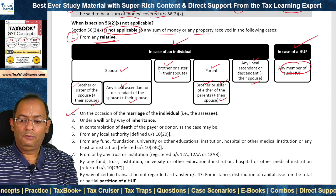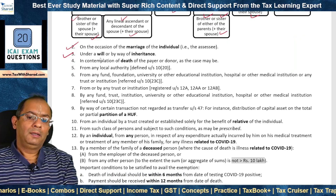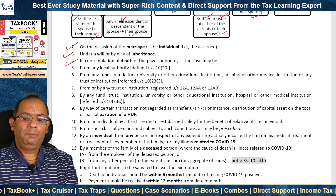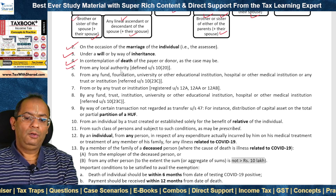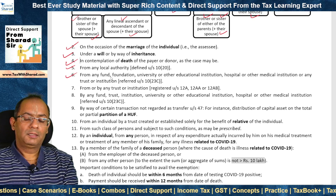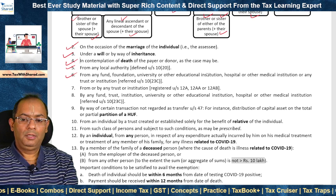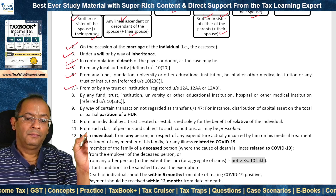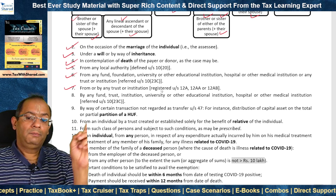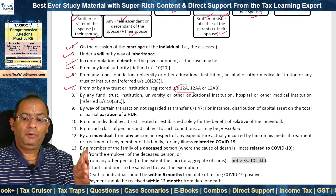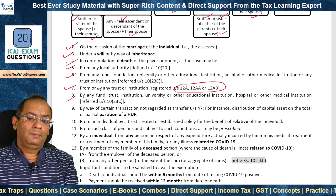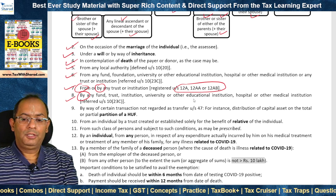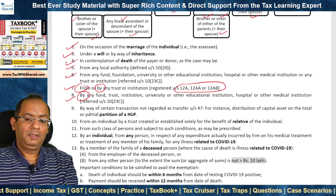Second exception: on the occasion of the marriage of the individual. Third: under a will or by way of inheritance. Fourth: in contemplation of death of the payer or donor. Fifth: from any local authority defined under Section 10(20). Sixth: from any fund, foundation, university or other educational institution, hospital or other medical institution, or any trust or institution referred to under Section 10(23C). From or by any trust or institution registered under Section 12A, 12AA or 12AB. From or by any fund, trust, institution, university, or educational institution, etc., referred to under Section 10(23C). By way of certain transactions not regarded as transfer under Section 47 — for example, distribution of capital asset on total or partial partition of HUF, so a member receiving asset from the HUF on partition will not attract Section 56(2)(x).